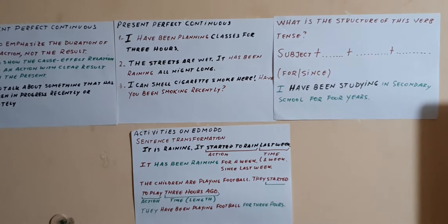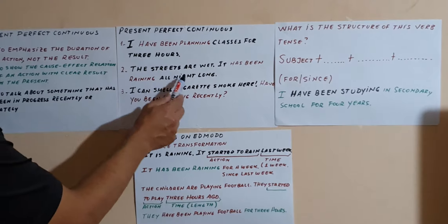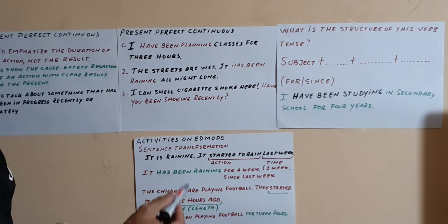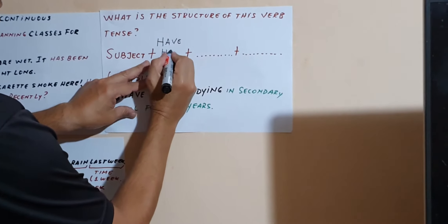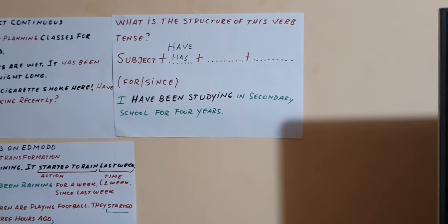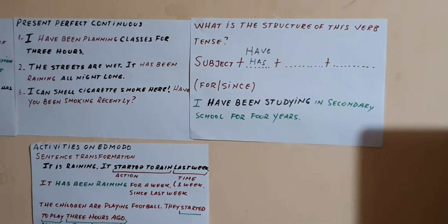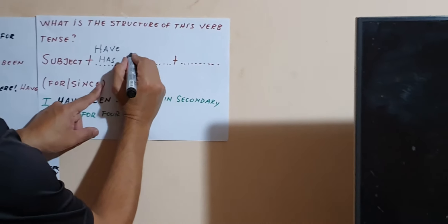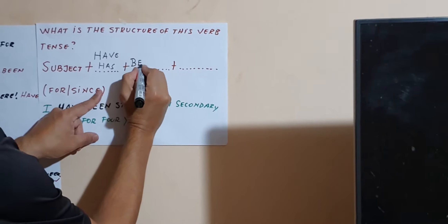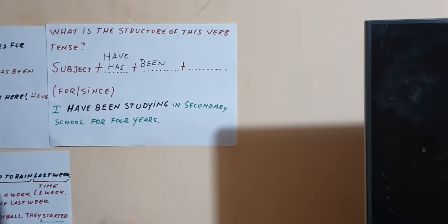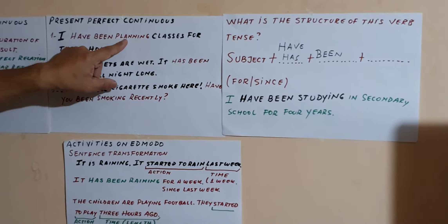So, voy a correr un poquito, perdón, para buscar el marcador, so as to write the structure of this verb. So we have the subject. Después del sujeto qué ponemos? Have. Acá pusimos have, acá pusimos has. So the subject plus have or has.